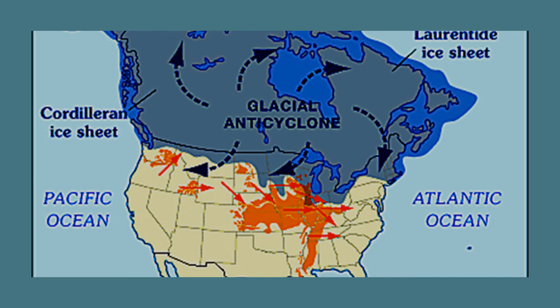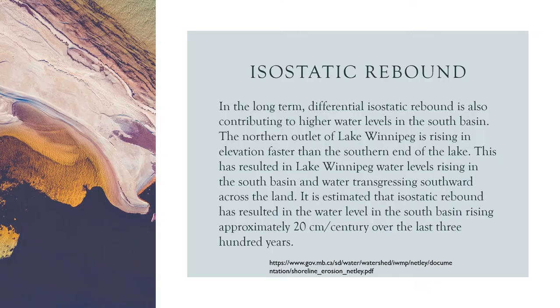The center of the Laurentide Ice Sheet was located just about at the north edge of where Lake Winnipeg now lies. As the glacier melted, the earth began returning to its original shape, much like an inflated balloon will do when you remove the pressure of your hand from one spot. This process of land recovering from the weight of the glacier is known as isostatic rebound.